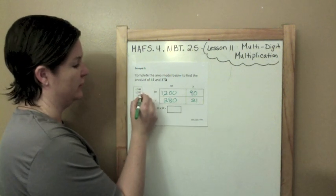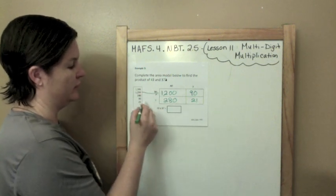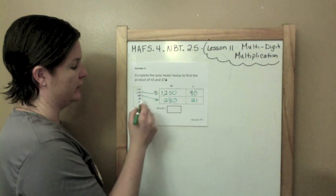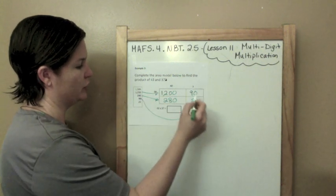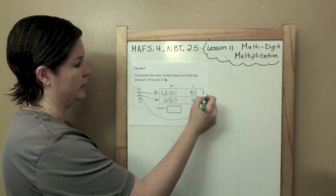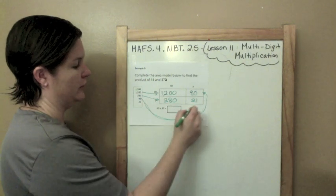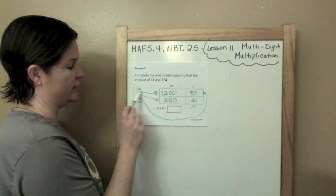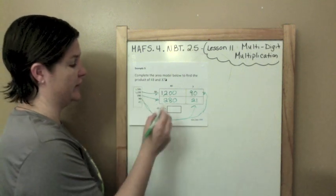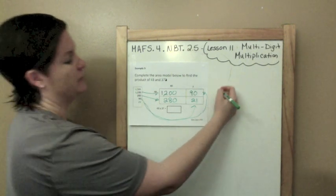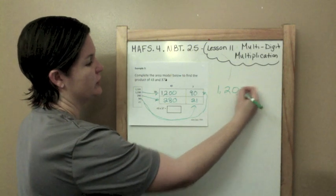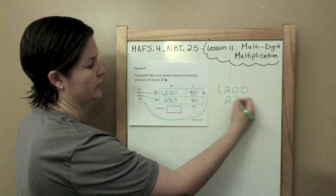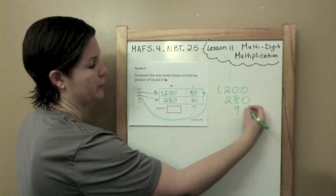So as you can see, this went here. 280 went there. So if this were on the computer, you might have to drag them like that. And now my answer, which it's going to make sense that it's 1,591, goes right there. But I'm going to add them all up over here just so I can show you. Just so I can prove it to you.